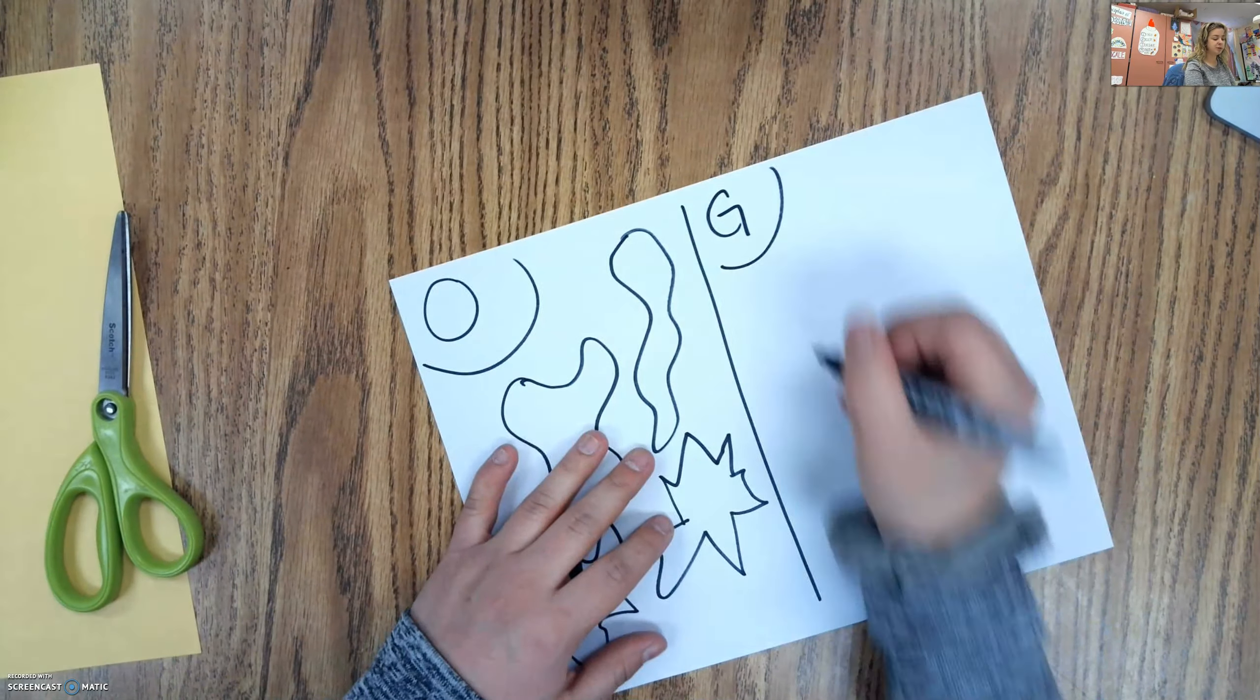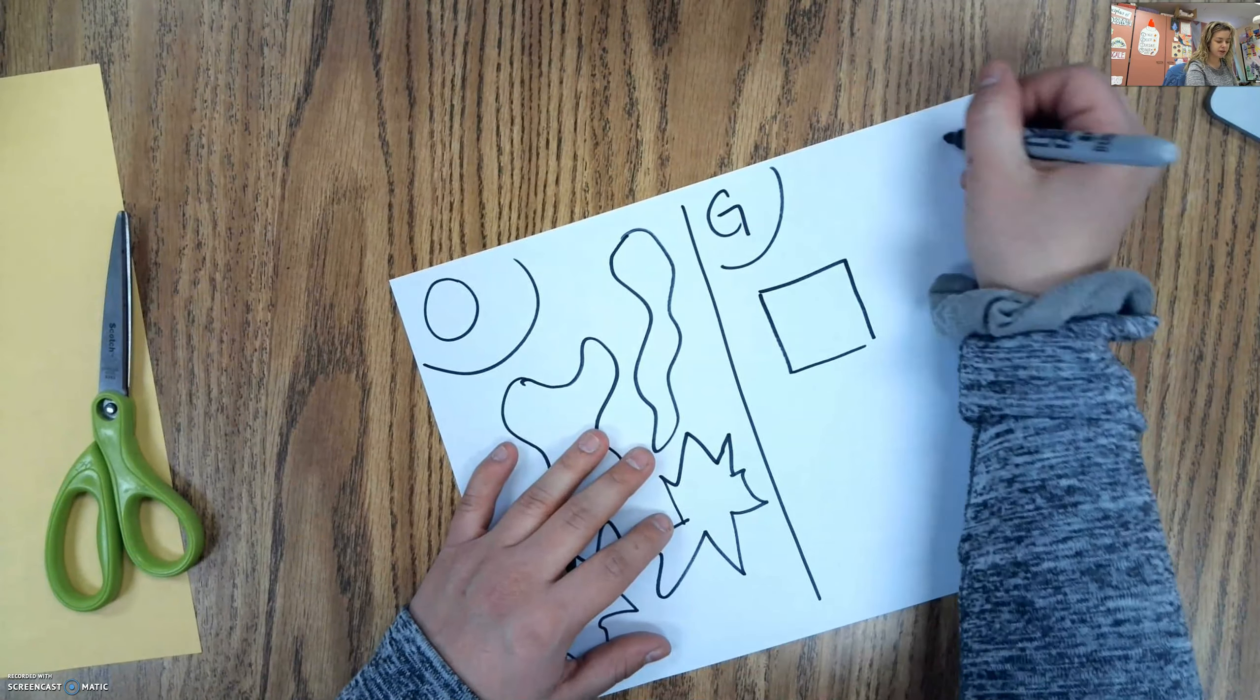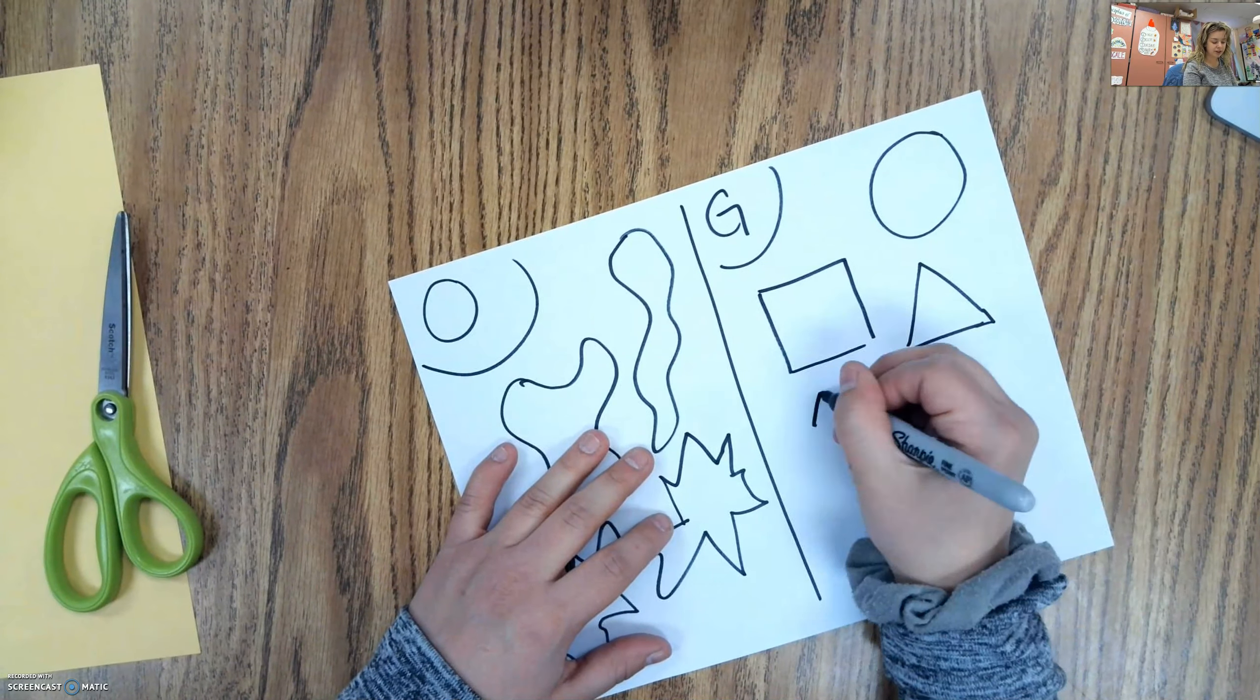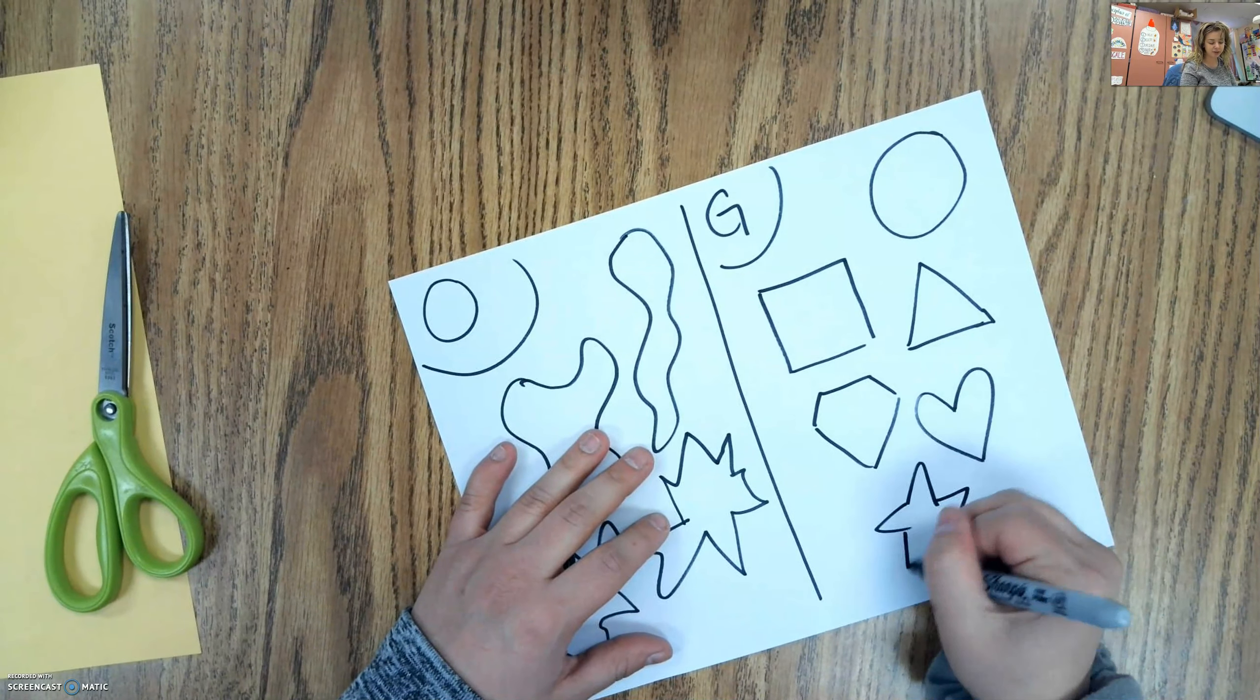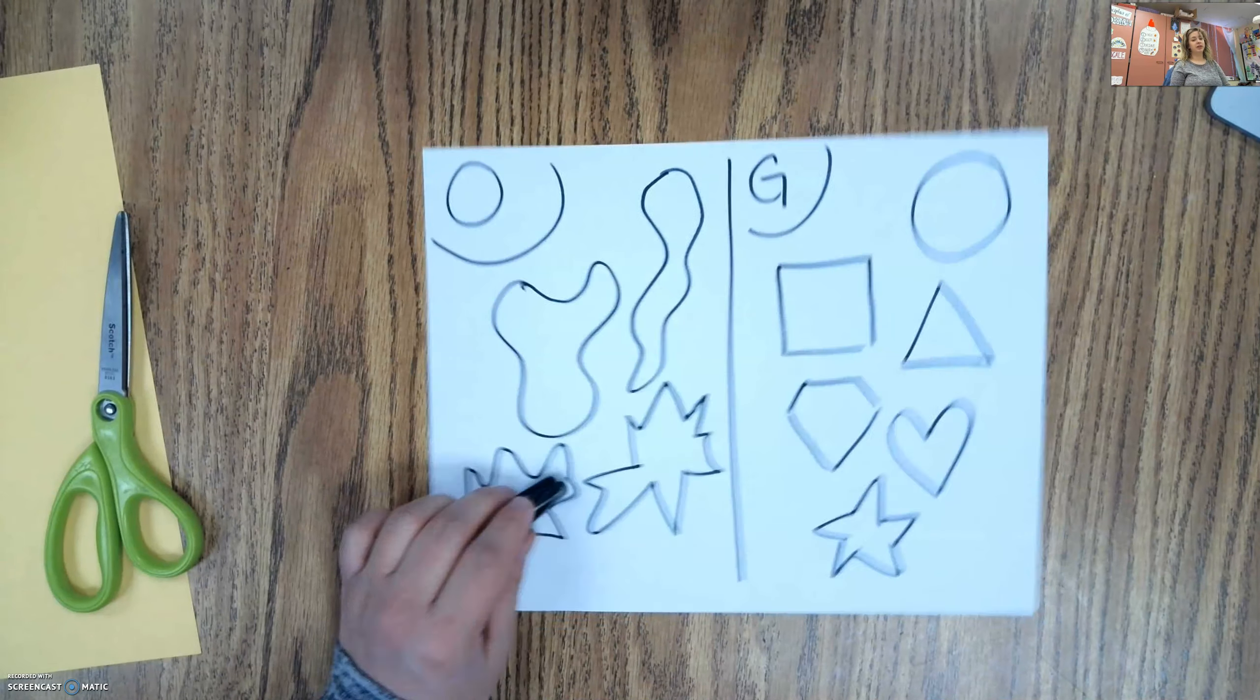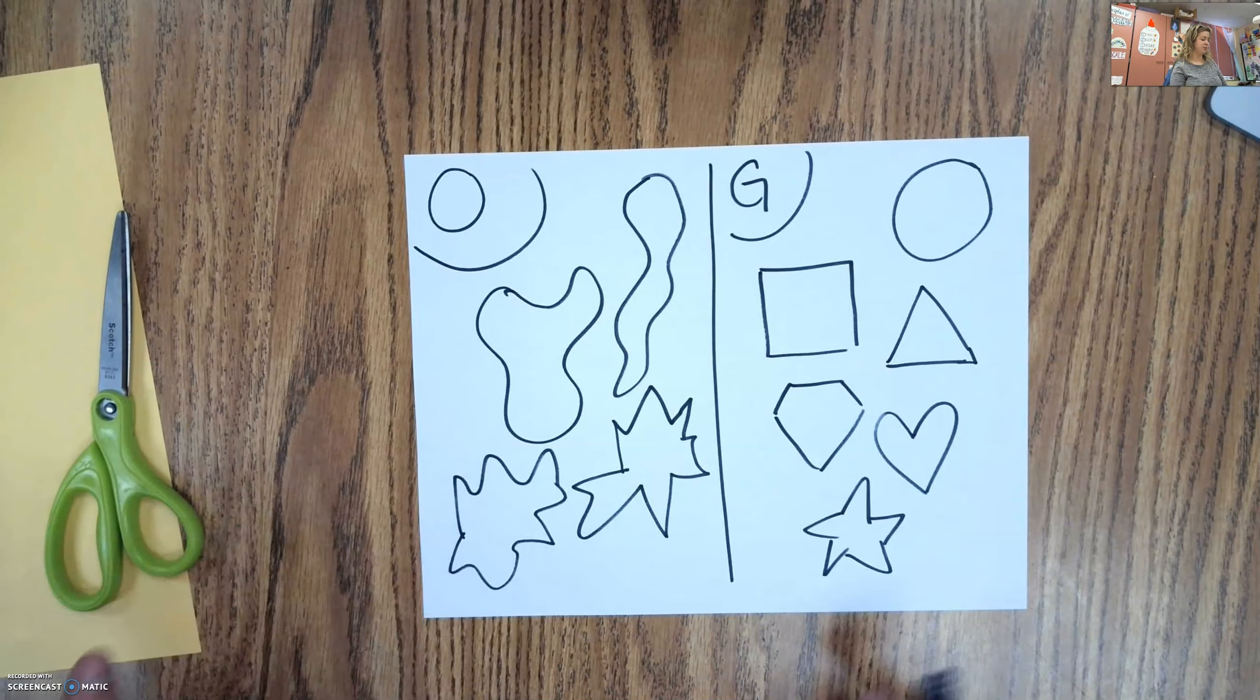Geometric shapes are shapes we recognize that have names. Shapes like squares, circles, triangles, diamond shapes, hearts, stars, and many more. Pretty much any shape that you know that has a name is a geometric shape. Organic shapes don't have names and they're kind of wibbly wobbly shapes.